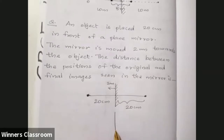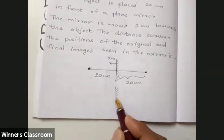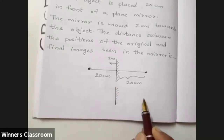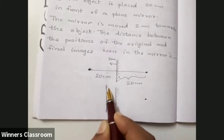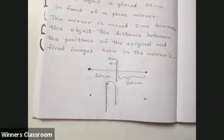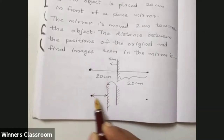In the next situation, the mirror is moved. The object is still here — the object is the same distance. But what will be the distance between the mirror?